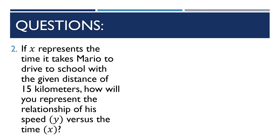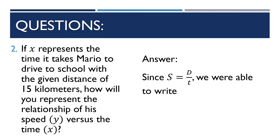Question 2: If X represents the time it takes Mario to drive to school over a distance of 15 kilometers, how do we represent the relationship of his speed Y versus time X? Since S = D/T, we write Y = 15/X, where speed is Y, time is X, and X ≠ 0.